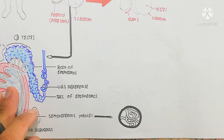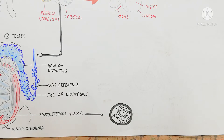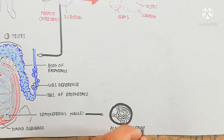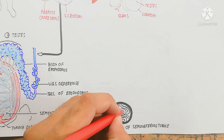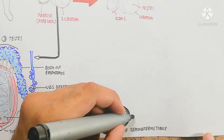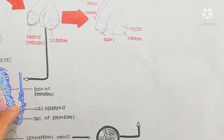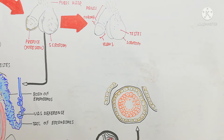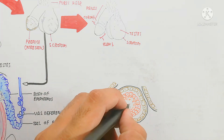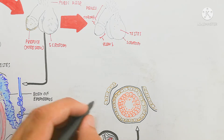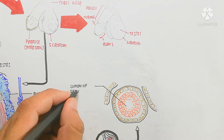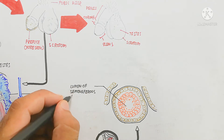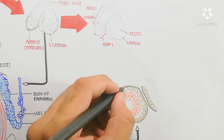Here is a cross-section of the seminiferous tubule, which we will discuss now. The cross-section of the seminiferous tubule shows the whole character of the tubule and its cells. The lumen of the seminiferous tubule contains spermatozoa, while the basement membrane shown in black contains, on its inside, the spermatogonia or stem cells.